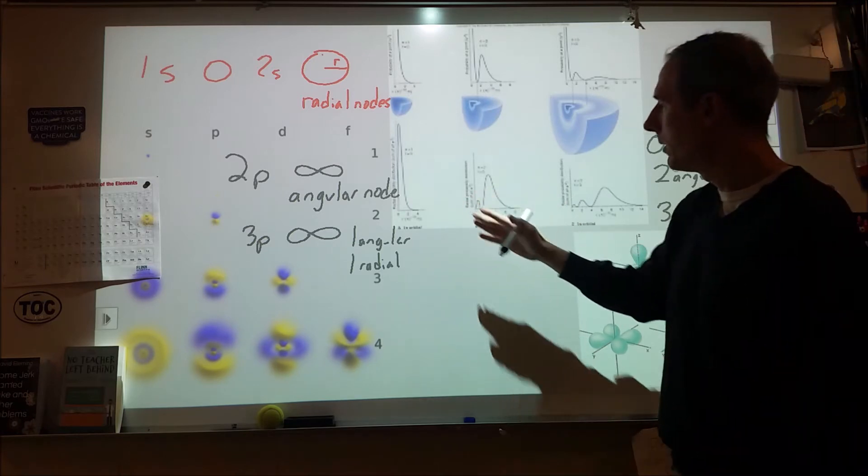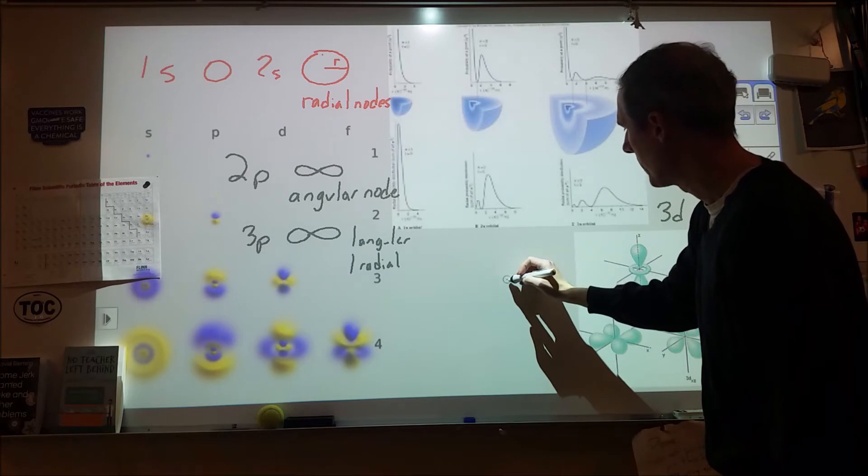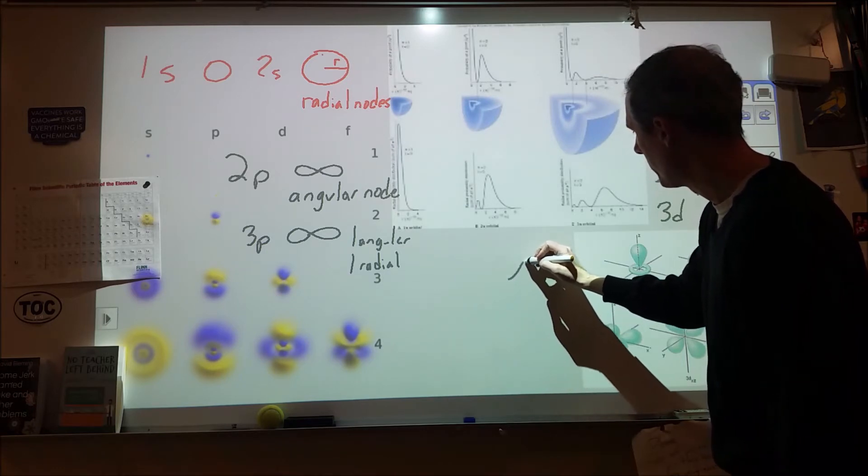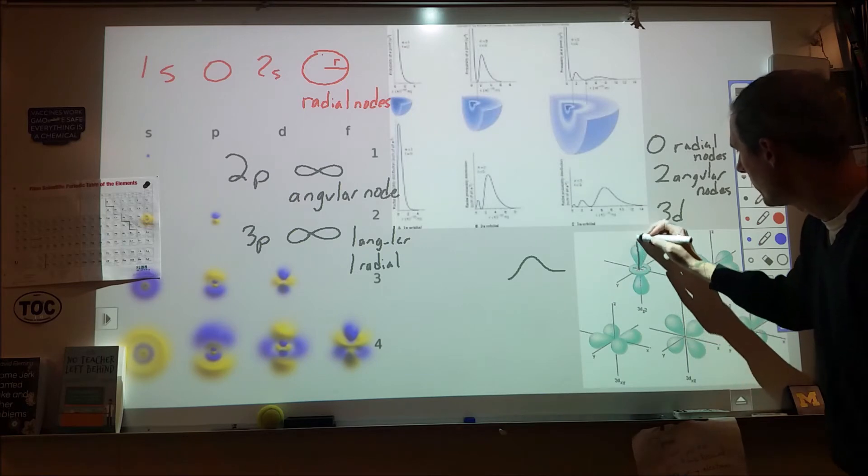So for 3d orbitals, we have two angular nodes. And based on the way the patterns work out, we have zero radial nodes. Which basically means that if we look in a direction where there's electron density, that basically our electron density just goes like this. It's like at the nucleus, it's pretty much zero, and then kind of goes in like that.